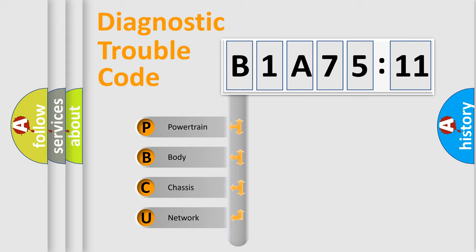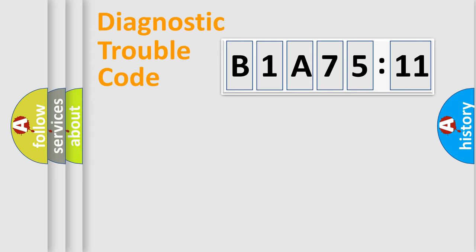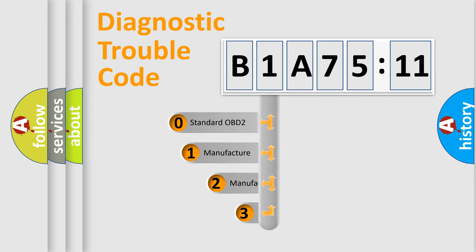We divide the electric system of an automobile into four basic units: Powertrain, Body, Chassis, and Network. This distribution is defined in the first character code.